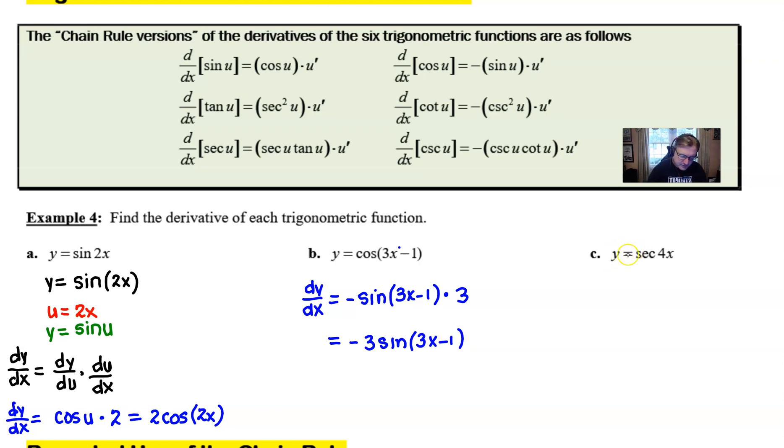One more. The derivative of secant of 4x. Well, we're going to start this off by taking the derivative of the outside function, which is secant. The derivative of secant is secant times tangent. Now, notice you want to make sure that you keep the 4x hanging around. You want the 4x to still be that something. The derivative of the secant of something is secant something times tangent something. Now, you finish off the problem by taking the derivative of that something, which is 4.